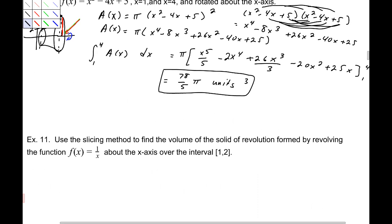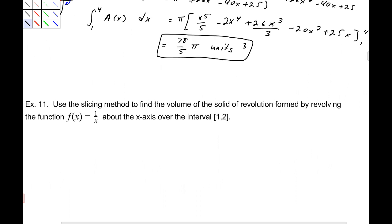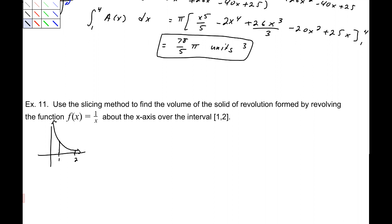Number 11: use the slicing method to find the volume of the solid of revolution formed by revolving f(x) = 1/x about the x-axis over the interval 1 to 2. The function 1/x, going from 1 to 2, produces a region that when revolved around the x-axis gives a solid that looks like a tapered shape.